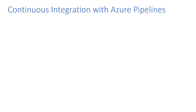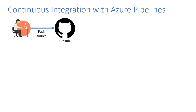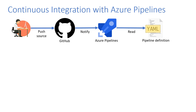Before diving into how to create a pipeline, it's good to understand the typical sequence of steps in Azure Pipelines and how it enables continuous integration scenarios. It all starts with a software developer who has code ready to push via Git into a remote GitHub repository. The push happens either directly or via pull request, and GitHub has already been configured to notify Azure Pipelines that such an event has happened. Azure Pipelines will then read what we call the pipeline definition, which is a YAML file stored in your GitHub repository, telling it what steps to execute and where to execute the pipeline.